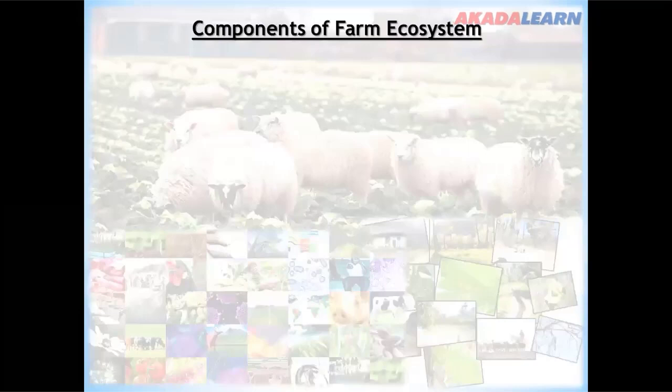Components of ecosystem: basically the components of an ecosystem are divided into two — the biotic components and the abiotic components.